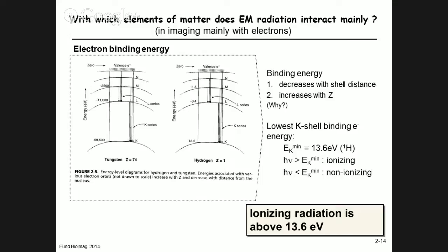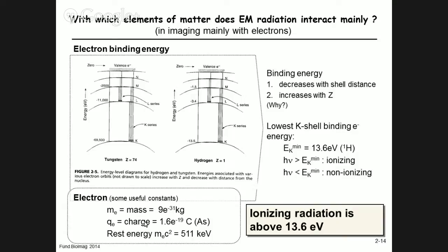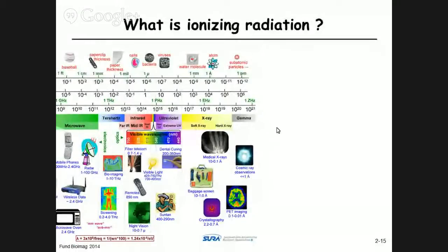Some additional useful constants: the mass of the electron, the charge of the electron in coulombs (ampere seconds), and the rest energy of the electron m_e c² — from Einstein's relationship — which is 511 kilo electron volts. We're going to need that number later in the course.